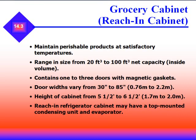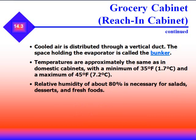Grocery cabinets are reach-in cabinets that maintain perishable products at satisfactory temperatures. They range in size from 20 to 100 cubic feet net capacity, contain one to three doors with magnetic gaskets, door widths varying from 30 to 85 inches, and heights from 5.5 to 6.5 feet. The reach-in refrigerator cabinet may have top-mounted condensing units and evaporators, with cooled air distributed through a vertical duct. The space holding the evaporator is called a bunker. Temperatures range from a minimum of 35°F to a maximum of 45°F, with relative humidity about 80% — necessary for salads, desserts, and other fresh foods not to dry out.